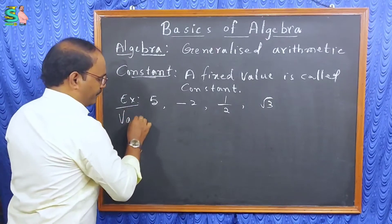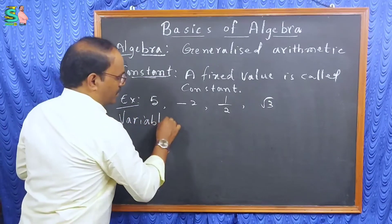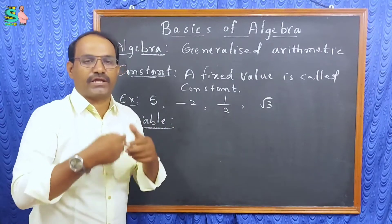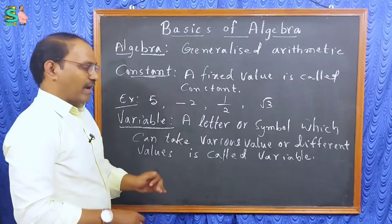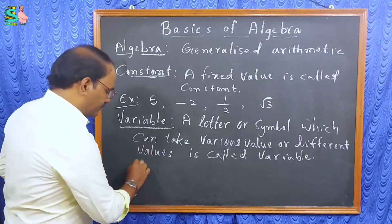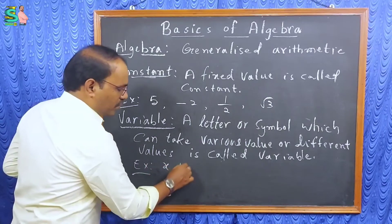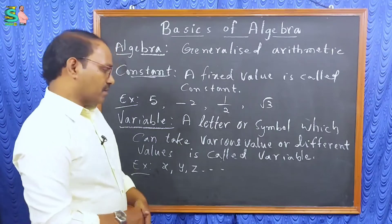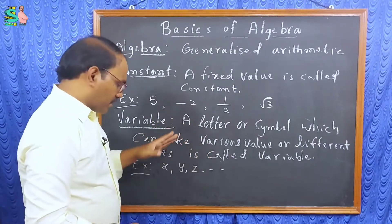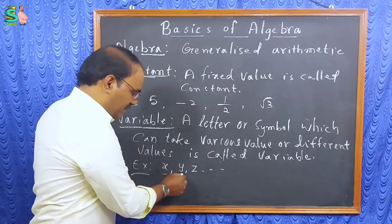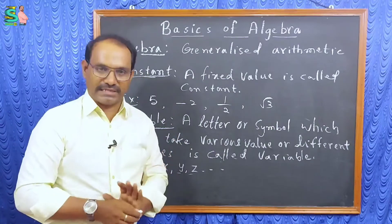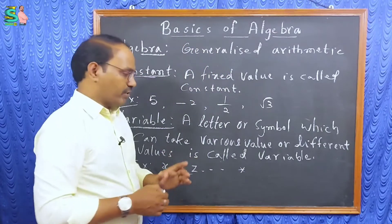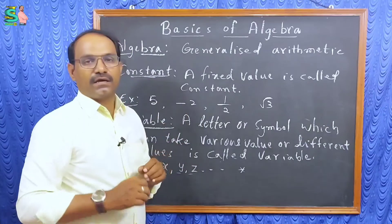The second term is variable. What is a variable? A variable means a letter or symbol — we can use symbols also in the place of a letter. We use lowercase letters of the English alphabet. Sometimes we use symbols also, like a star mark or question mark. Those are called variables.